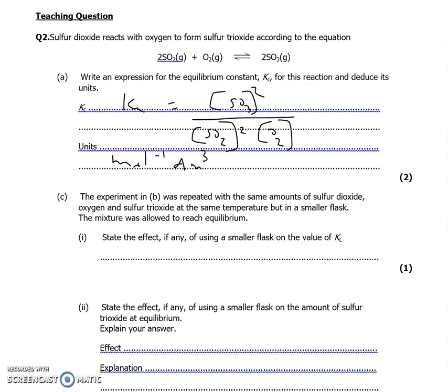It says here, in an experiment, the reaction was repeated with the same amounts of sulfur dioxide, oxygen and sulfur trioxide, but in a smaller flask. The mixture was allowed to reach equilibrium. State the effect, if any, on using a small flask on the value of Kc. No effect. Because only temperature changes the value of Kc.